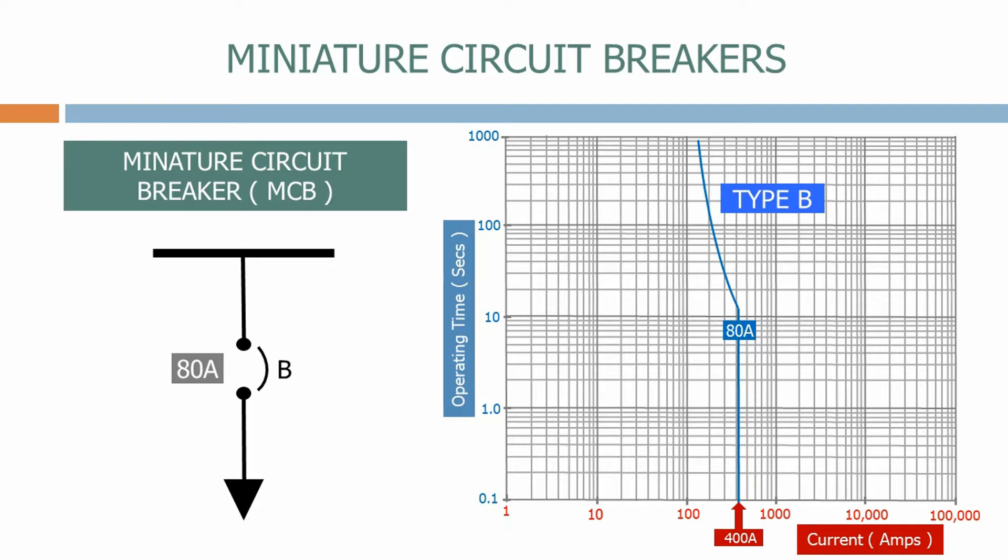MCBs come in all different ratings and as you would expect as the rating decreases we move to the left of the current axis and the MCB will trip instantaneously at a lower current magnitude.